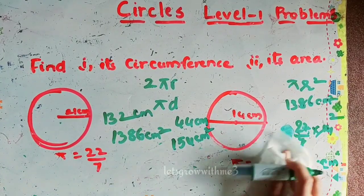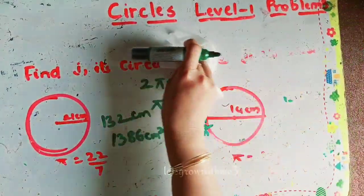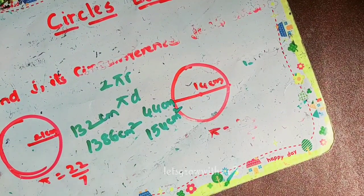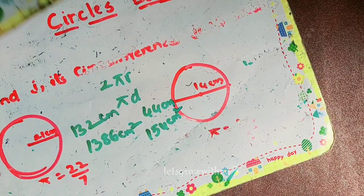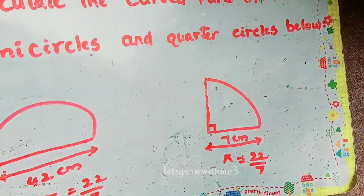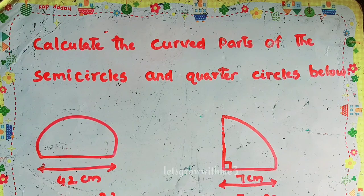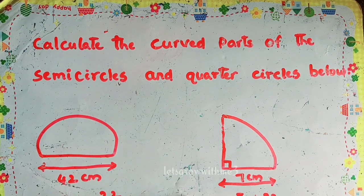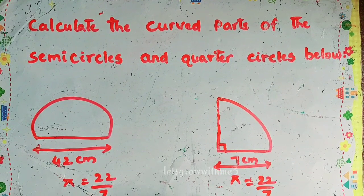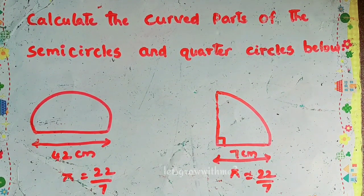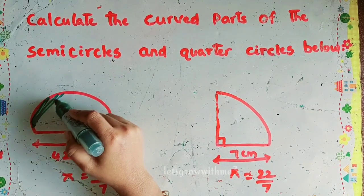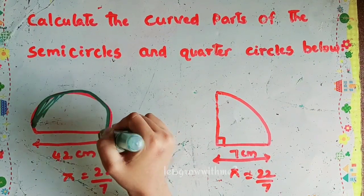These are all very simple direct problems — you just substitute values into the formula. Next question: calculate the curved part of the semicircle and quarter circles. We have discussed circumference, area, and perimeter, but here they are asking specifically for the curved part of the semicircle.